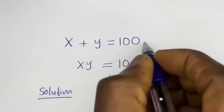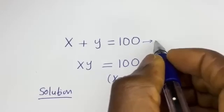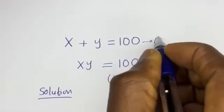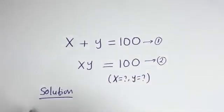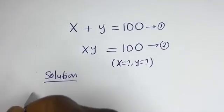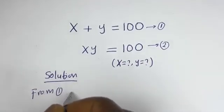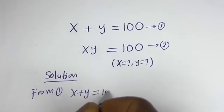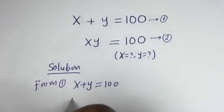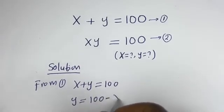x plus y is equal to 100 — let's call this equation 1. xy is equal to 100 — let's call this equation 2. Then from equation 1, x plus y equals 100, so y is equal to 100 minus x. Let's call this equation 3.